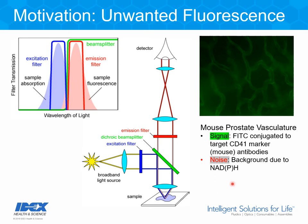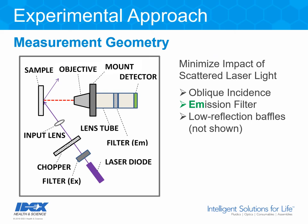It's worth mentioning that optics — lenses and filters — can also fluoresce, and they too can affect the ultimate signal-to-noise performance. So how does one measure autofluorescence in lenses and filters? Our experimental approach focuses on two key things: first, the measurement geometry, and second, the detection scheme. The measurement geometry is set up to minimize the impact of scattered light.